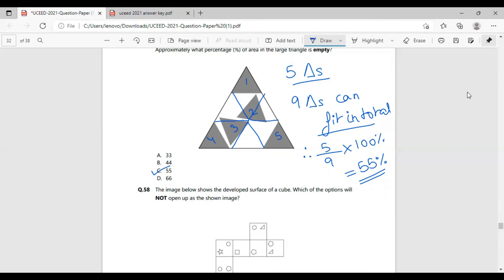But other than the calculation, there can be nine full triangles that can fit in this bigger triangle. And therefore, in order to calculate the area, I just divided nine by five, coming out to 55%. So, the answer to this question will be part C, 55%.